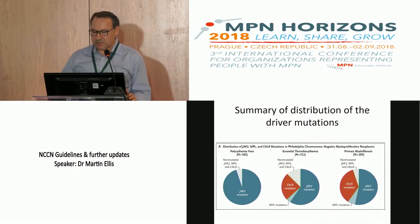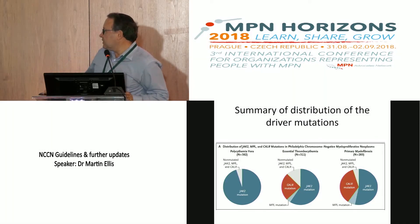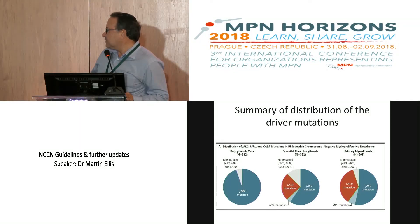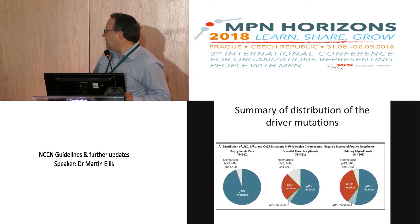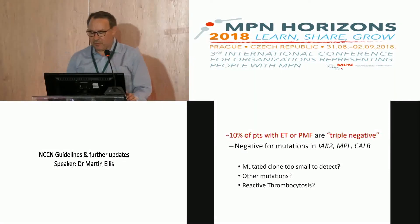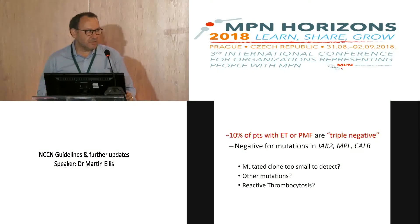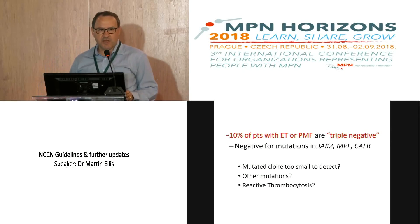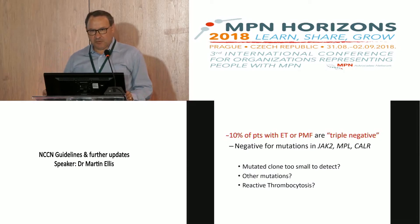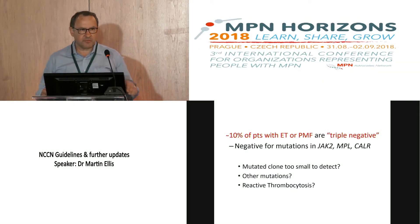With the calreticulin mutation discovered, we now have a fuller picture. Looking at these three diseases: PV has almost 100% of patients with a JAK2 mutation — either the classic exon 14 or rarer exon 12. ET shows approximately 50–60% with a JAK2 mutation, about another third with a calreticulin mutation, another 5% with an MPL mutation, and still a segment without any mutation. The picture with myelofibrosis is very similar to ET. There's an important group of approximately 10% who are so-called triple-negative — they do not have one of the three driver mutations: JAK2, calreticulin, or MPL.